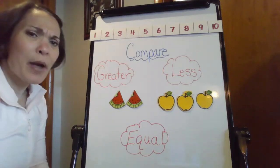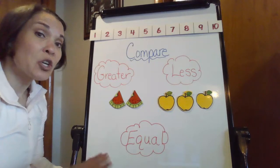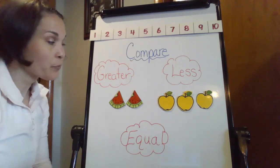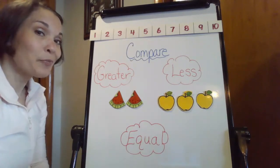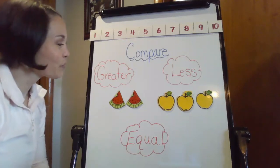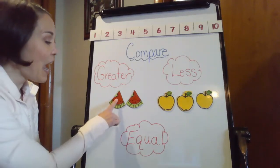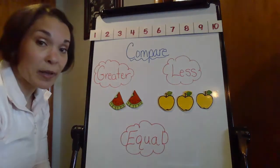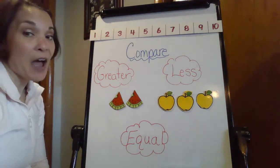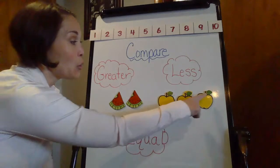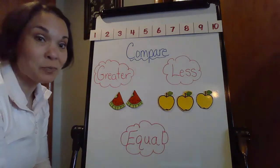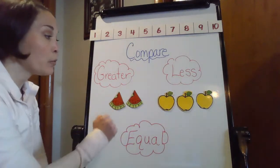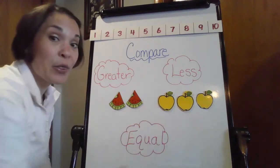But maybe you might be a person that really doesn't know how to compare numbers just by looking at the numbers. So today I got some pictures to help us out. As you can see, I have one, two watermelon pieces. Then I have one, two, three apples. So I have two versus three.